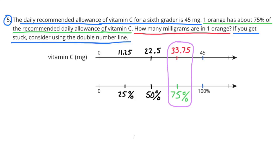100% equals 45 milligrams. Half of 100% is 50%, so half of 45 is 22 and 5 tenths. Half of 50% is 25%, so half of 22 and 5 tenths would be 11 and 25 hundredths. So 75% would be 50% plus 25%, and the amount of milligrams that would be in one orange would be 22 and 5 tenths plus 11 and 25 hundredths. So 1 orange or 75% of the daily recommended allowance of vitamin C would be 33 and 75 hundredths.